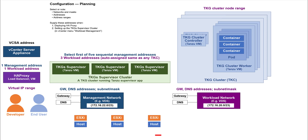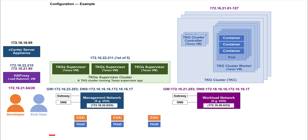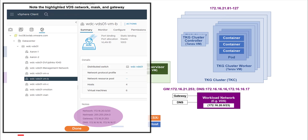In vCenter, you will not see a main menu item called TKG supervisor nor Tanzu. Tanzu is set up under the workload management menu item. If you have difficulty following the Tanzu Quick Start Guide, it may be in taking all the addresses you carefully planned and entering their correct values into the six dialog boxes you must fill out. So let's start with the example addresses and ranges shown here. Note there are no conflicting addresses. The VDS gateways, DNS, network addresses, and masks can be found in vCenter as shown here.